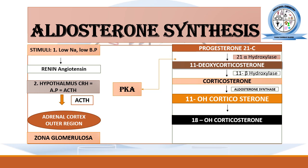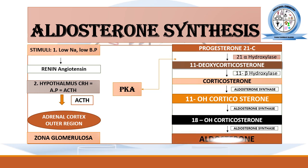In the next step, 11-hydroxycorticosterone is converted into 18-hydroxycorticosterone, and in the last step 18-hydroxycorticosterone is converted into aldosterone. In all these steps the enzyme involved is aldosterone synthase. Aldosterone functions as a mineralocorticoid in the human body. Aldosterone is not commercially available; the commercially available mineralocorticoid is fludrocortisone acetate.